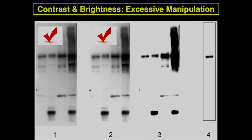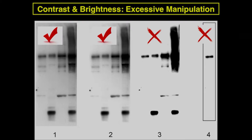These first two panels are acceptable because the details are kept. The third panel is not acceptable because you have adjusted the contrast and brightness too much, obscuring some of the data — a band disappears, for example. Even worse, some people cut out a band entirely and then adjust brightness and contrast to show only one band. That is a definite no-no.